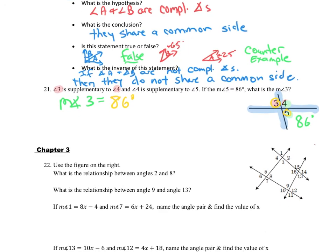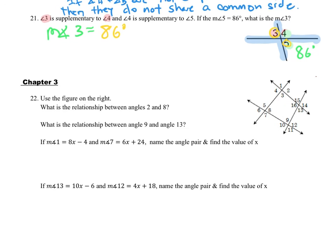Now we're in chapter 3 with all these angle relationships. Angle 2 and angle 8: we've got a transversal and two other lines. They're in the same position relative to the intersection point — to the right of that point. So these are corresponding angles.